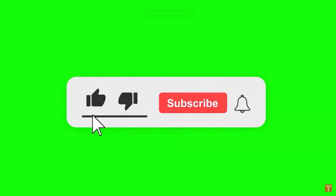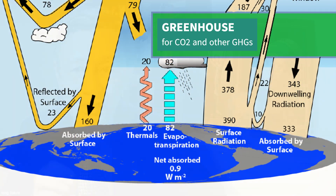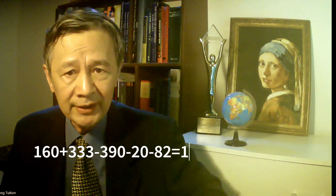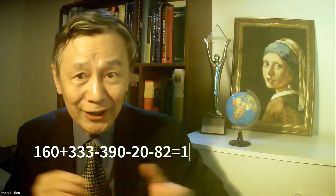How about the energy imbalance at the surface? Strangely, all integers were used in his diagram near the surface. They are: solar radiation at the surface 160, back radiation from greenhouse gases 333, minus surface radiation 390, minus non-radiative energy transfer from the surface to the atmosphere — 20 sensible heat plus 82 latent heat evaporation. So the net cash flow at the surface is 1 W/m² — not zero, an unbalanced budget.